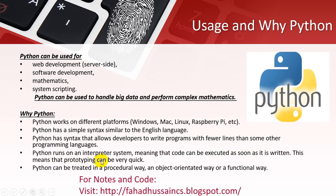This means that prototyping can be very quick. In a compiler-based environment like Visual Studio using C++ or C#, if you have a one-line code error the compiler blocks further execution until you resolve it. In Python's interpreter, execution works differently — Python can be treated in a procedural way, an object-oriented way, and a functional way.